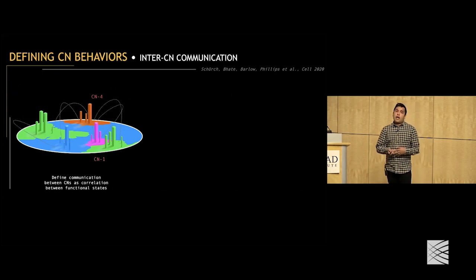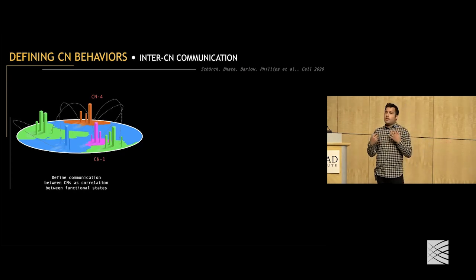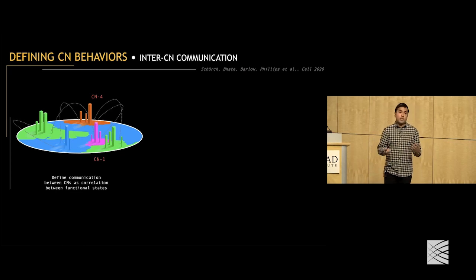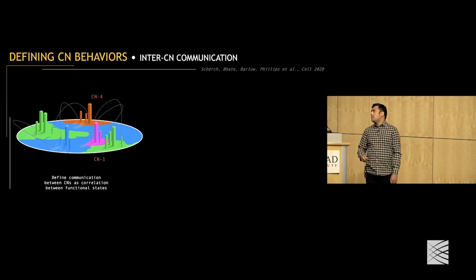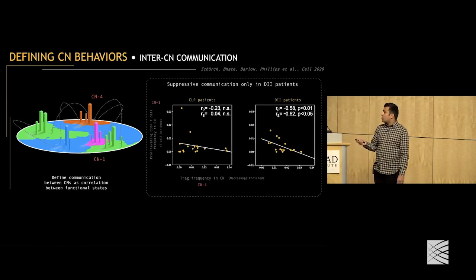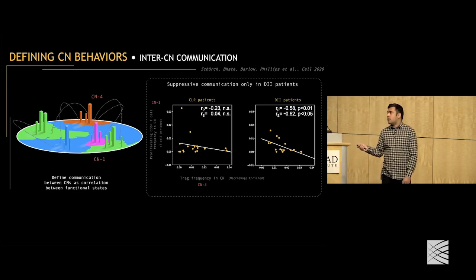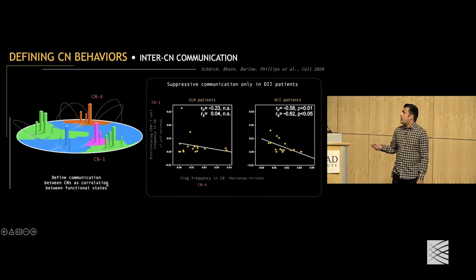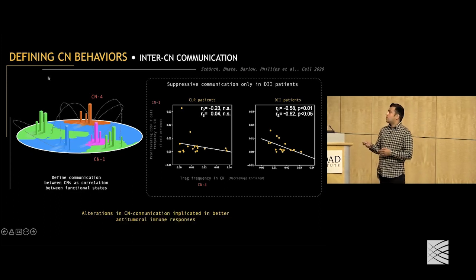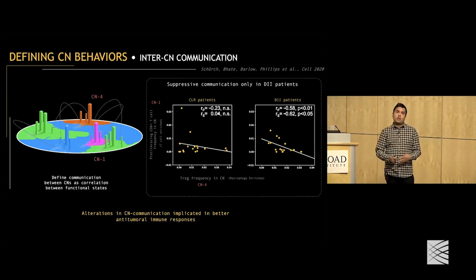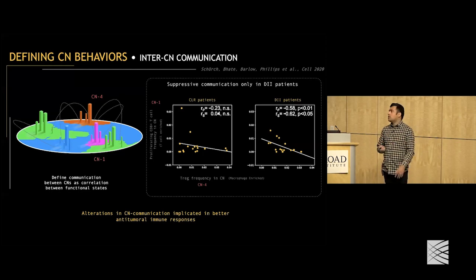Just as in a city, if what was happening in one neighborhood were correlated with what was happening in another, you'd infer some communication mediating that correlation. We define the communication between CNs as correlations between their functional states. We found that the frequency of Tregs — a suppressive cell type — in one CN was negatively correlated with the frequency of CD8 T cells in a different CN, but only in the group of patients that didn't do well.